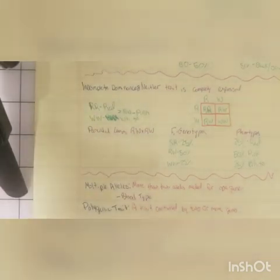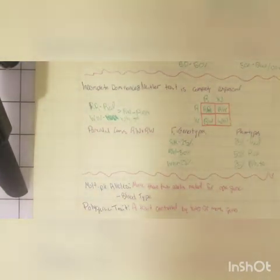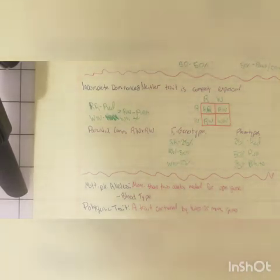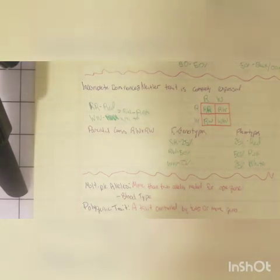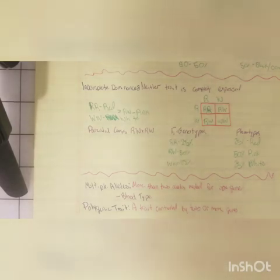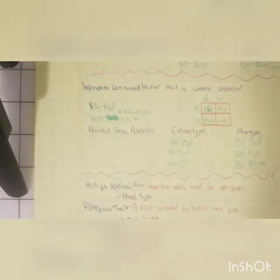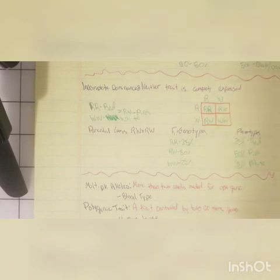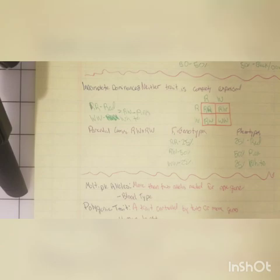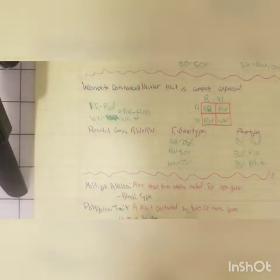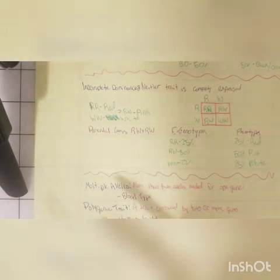Since blood type is so complex, more than two alleles are needed to express that one gene. For polygenic traits, an example is human height. Virtually every person on Earth has their own unique height, even if different by just a millimeter. Because everyone has different genes and height is a polygenic trait, it results in a continuous range of variation.